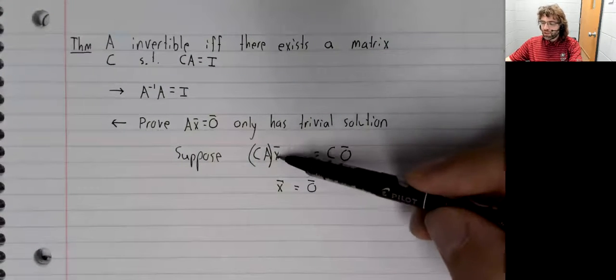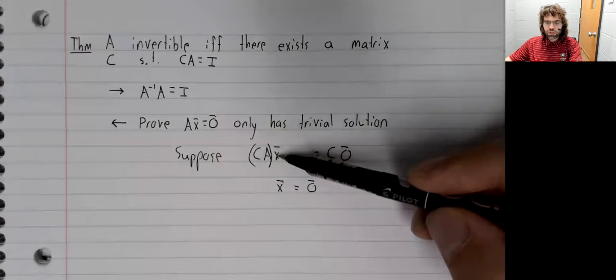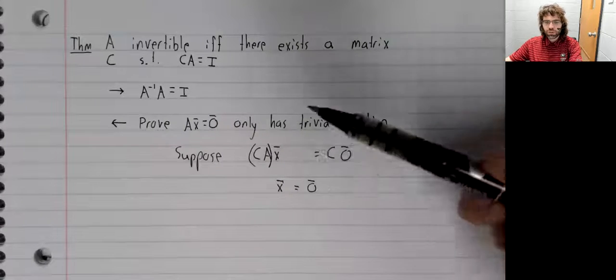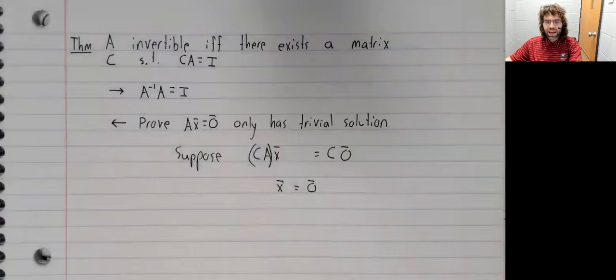Therefore, if x is a solution, x is the zero vector. And this only has the trivial solution.